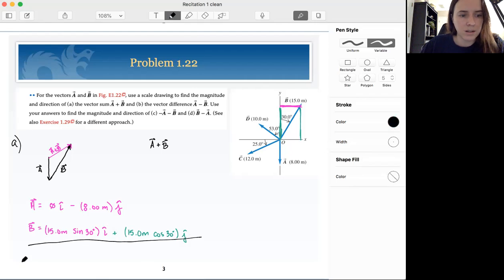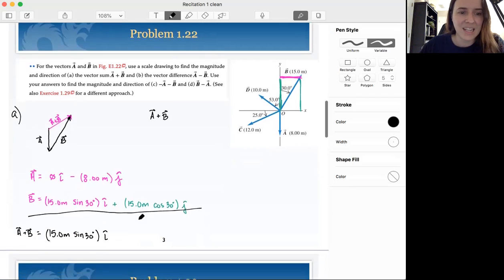So to add these two things together, we just directly add up the components. So 0 i hat plus 15 sine 30 i hat gives me 15 cosine 30. I don't have my unit circle memorized because I'm a slacker. So that's going to wait until the end. And then in the y direction we have negative 8 j hat plus 15 cos 30 j hat. So let's just stick this all together. So you have negative 8 meters plus 15 cosine 30 degrees j hat.